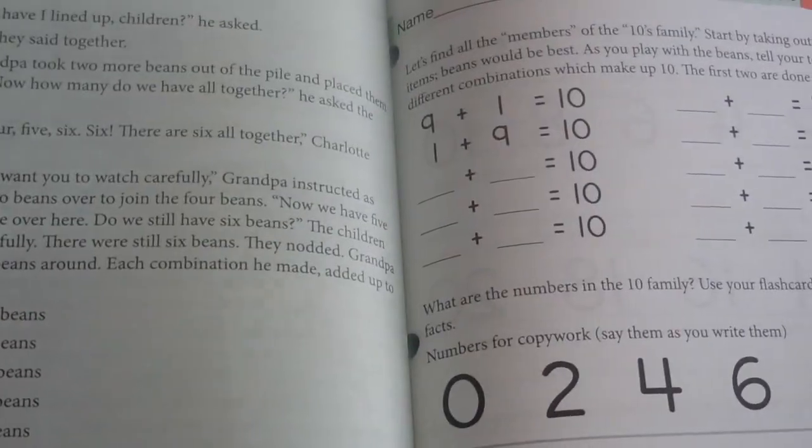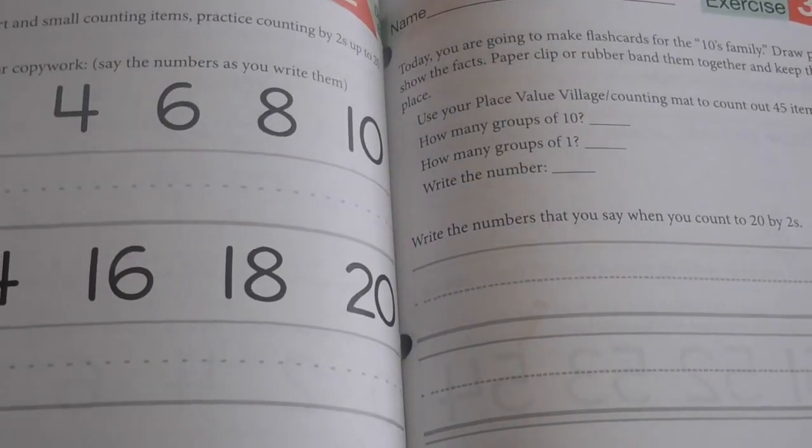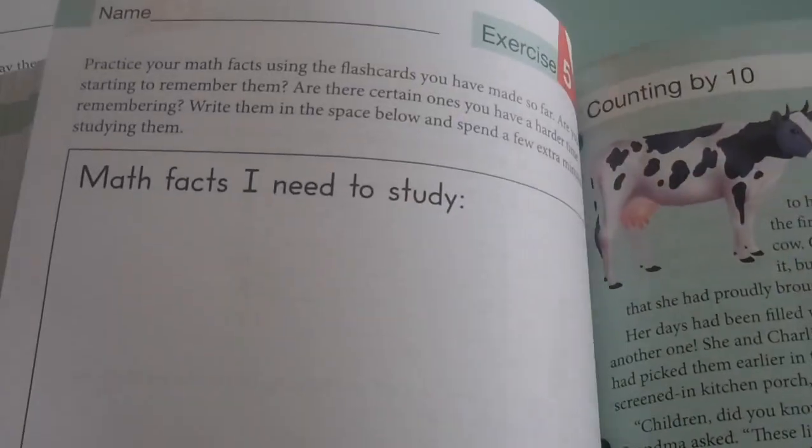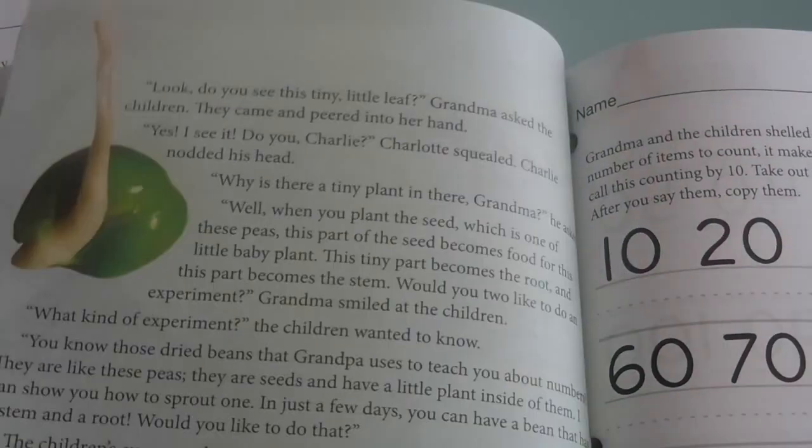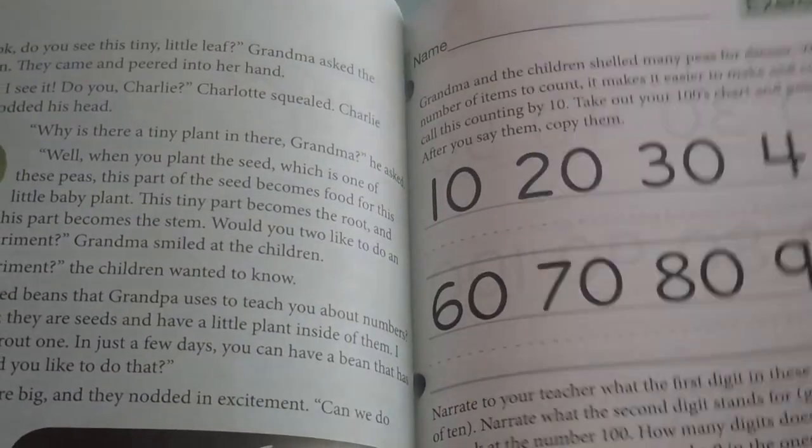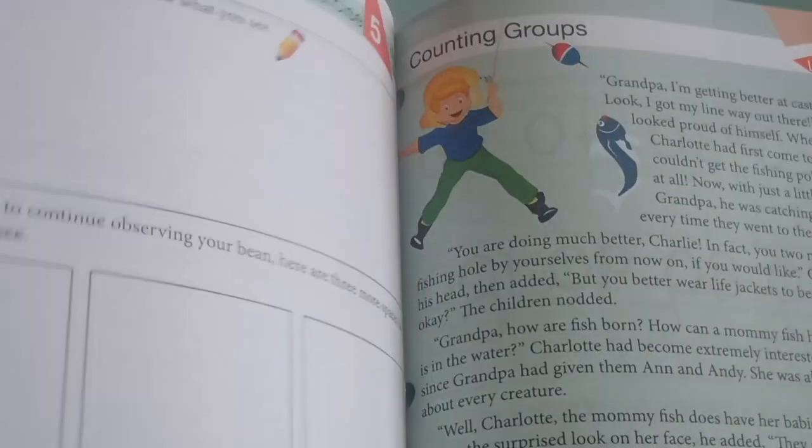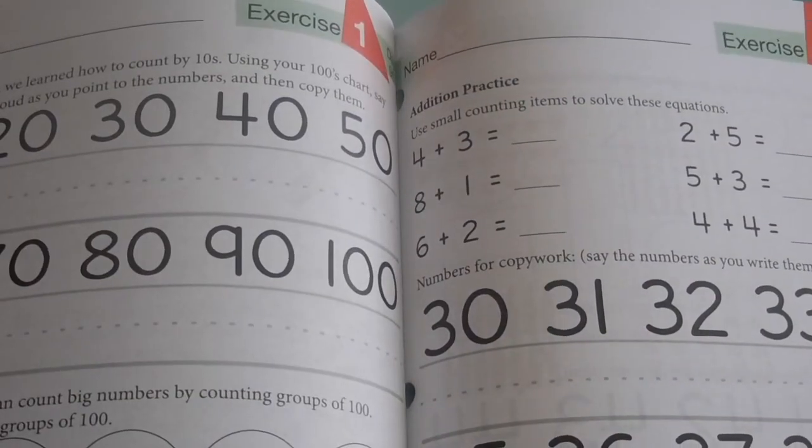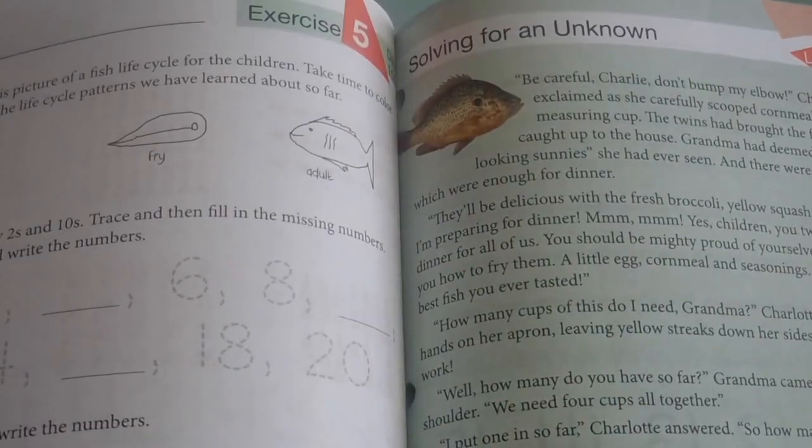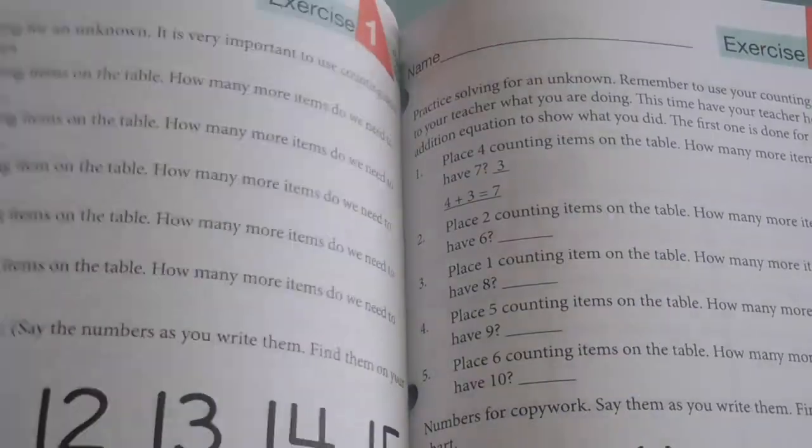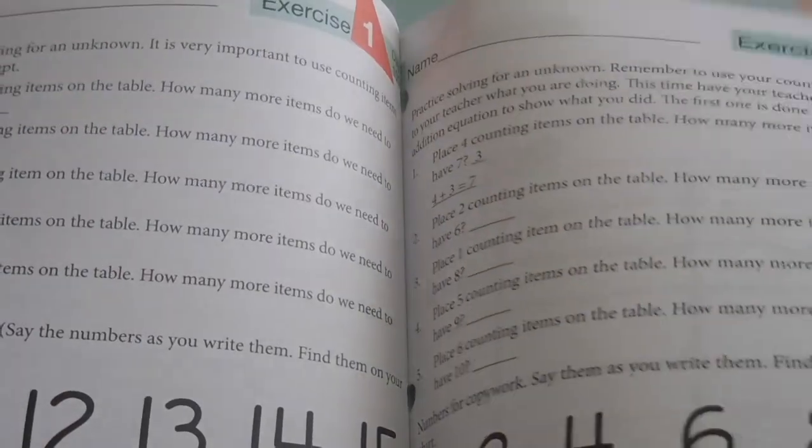It then moves on to skip counting and adding to tens, solving for unknown. In between, in the stories it talks about helping out with chores, identifying vegetables and the parts that are edible. I love how it shows the importance of farmers and the hard work that they put into harvesting. We love going to farmers markets and eating as organic as we can, so it was nice that it was included in the story.